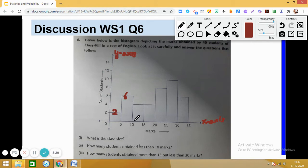This is how we read the histogram. 10 to 15 depicts 4 students, 15 to 20 also depicts 4, 20 to 25 shows 8 students, 25 to 30 has 10 students, and 30 to 35 has 6 students.